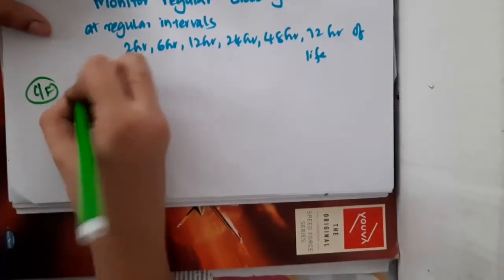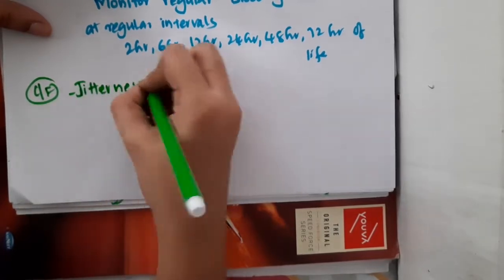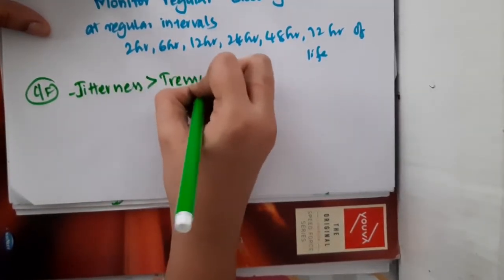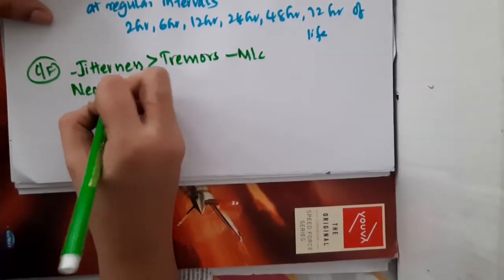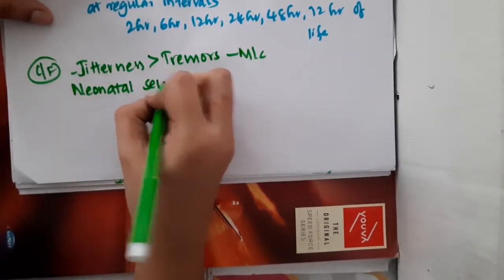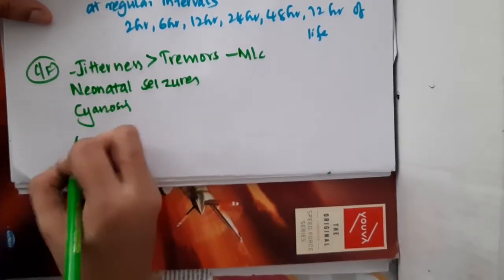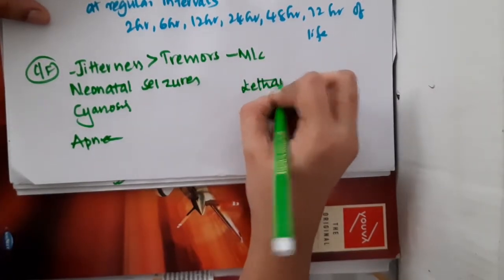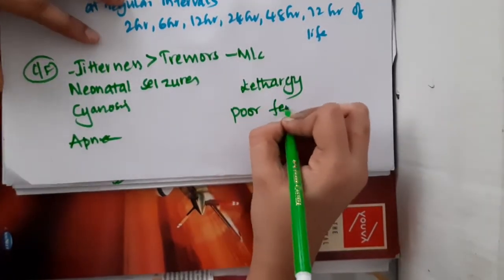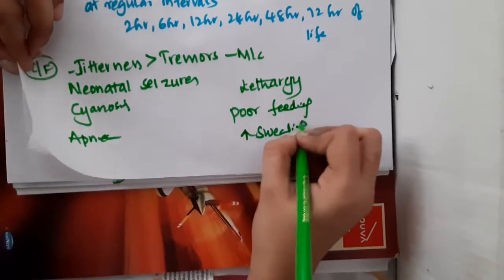If you see the clinical features in hypoglycemia, the baby will develop jitteriness more than tremors. These are the most common symptoms, and then the baby will develop neonatal seizures may be seen, cyanosis is seen, apnea may be seen in the baby. The baby may develop lethargy, poor feeding, and also increased sweating is seen in the baby.